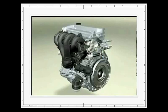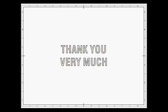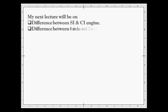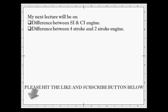And that's it for today's class. Thank you very much for being with me till the end. I hope you all liked this lecture and would have gained some basic information regarding the different parts of an IC engine. In my next lecture, I am going to explain about the difference between SI and CI engine and four-stroke and two-stroke engines. Please hit the like and subscribe button below and stay connected for the future classes. Bye-bye. I'll see you all again in my next lecture. Thank you.